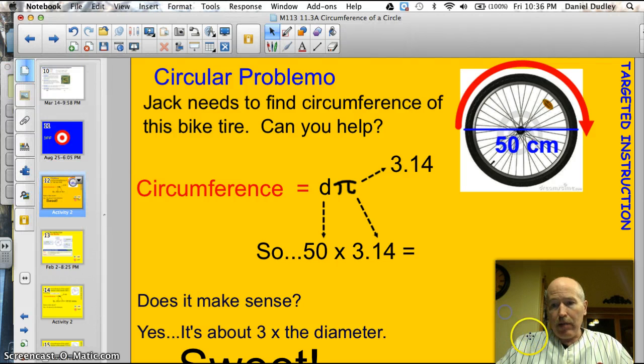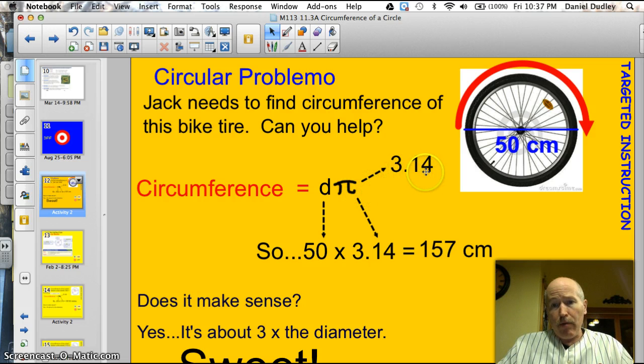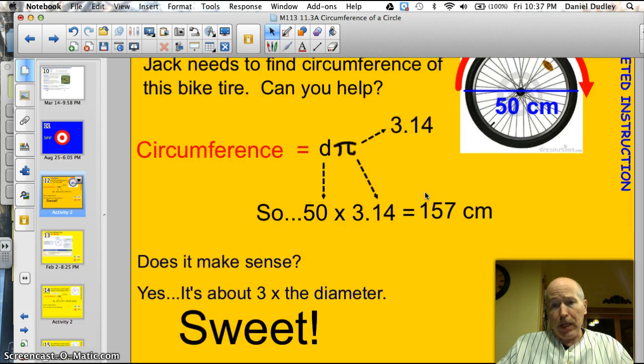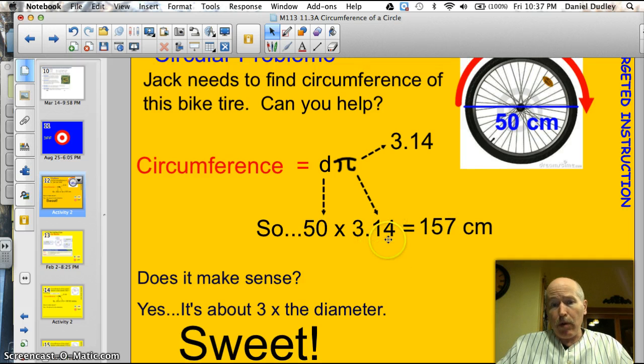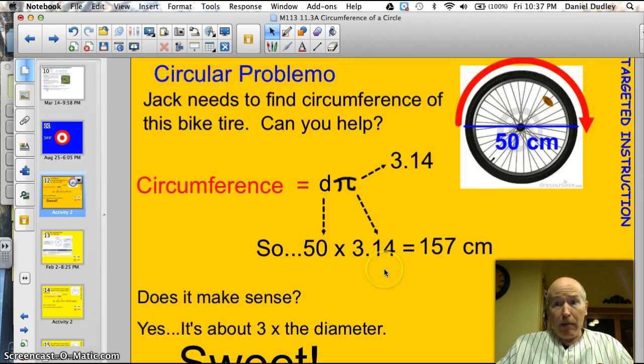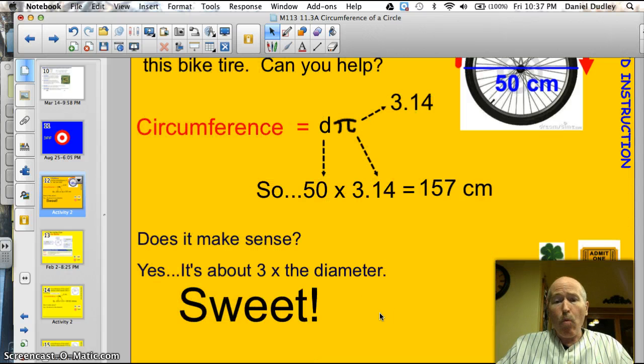Now if I add the label on there, I have 157 centimeters. So I have to ask myself, does this make sense? Well, remember that pi is like 3.14, approximately 3. So I say, is 50 times 3 about 157? Yeah, that's going to be a little bit bigger because it's actually 3.14. So I've got my answer, and it makes sense. Sweet!